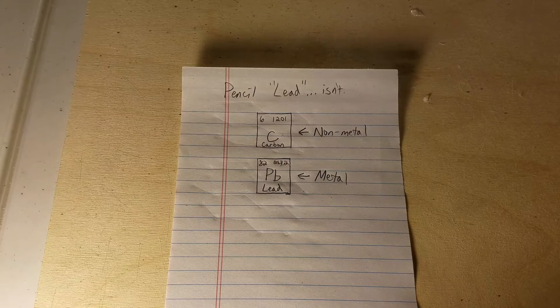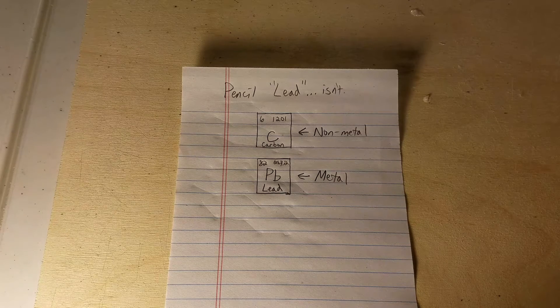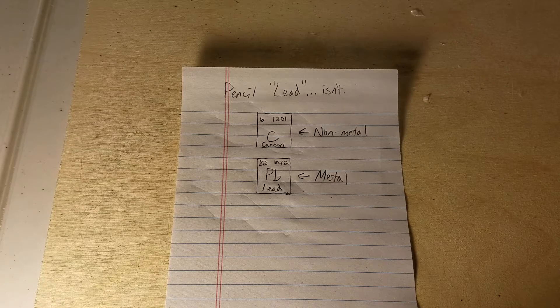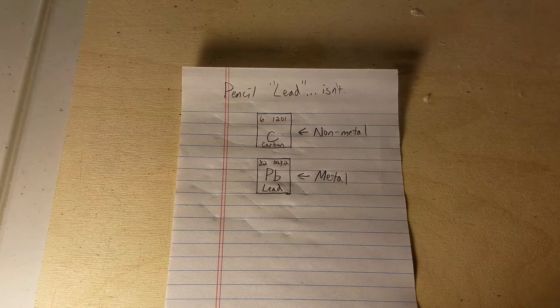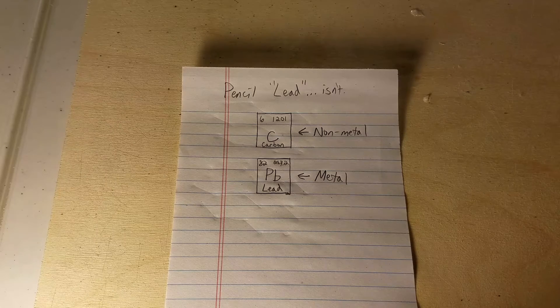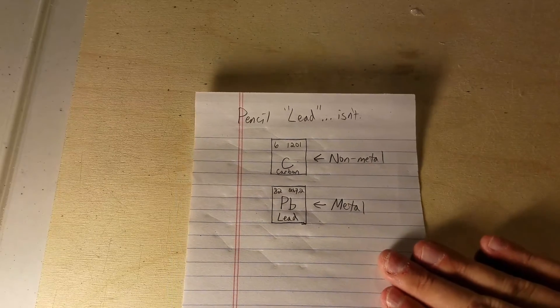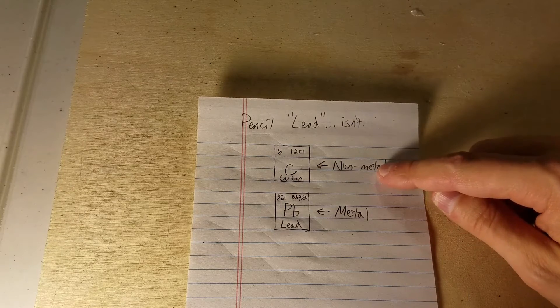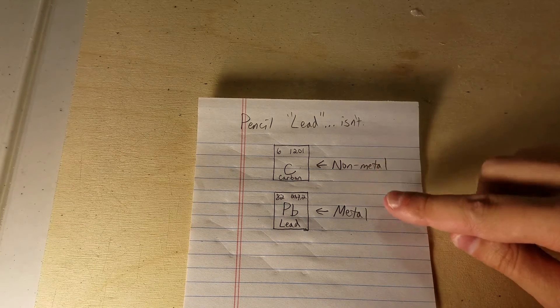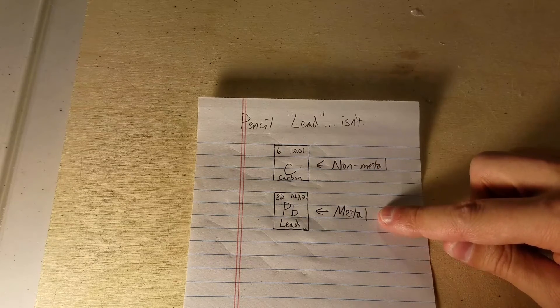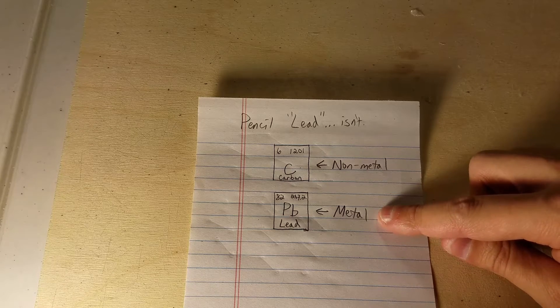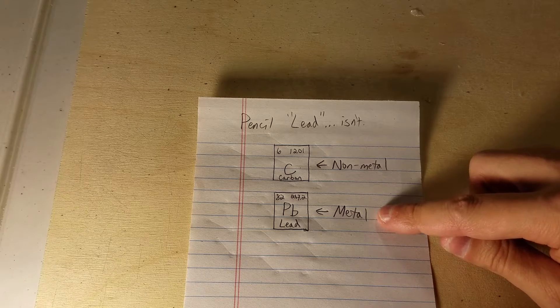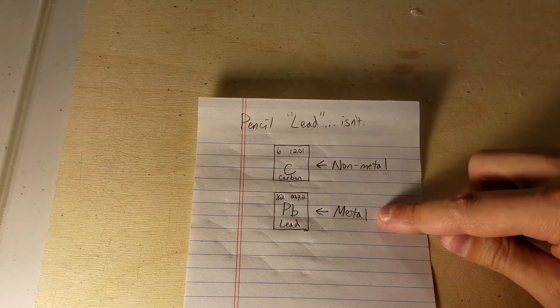It gets the name lead from the fact that just like lead can smudge your fingers, the metal, this crystalline structure of carbon graphite can do the same thing. If we think about the periodic table of the elements, carbon is a non-metal. It's located on the non-metal side of the periodic table and lead is a transition metal. It's located in that big section in the middle of it with metals that have multiple bonding properties.